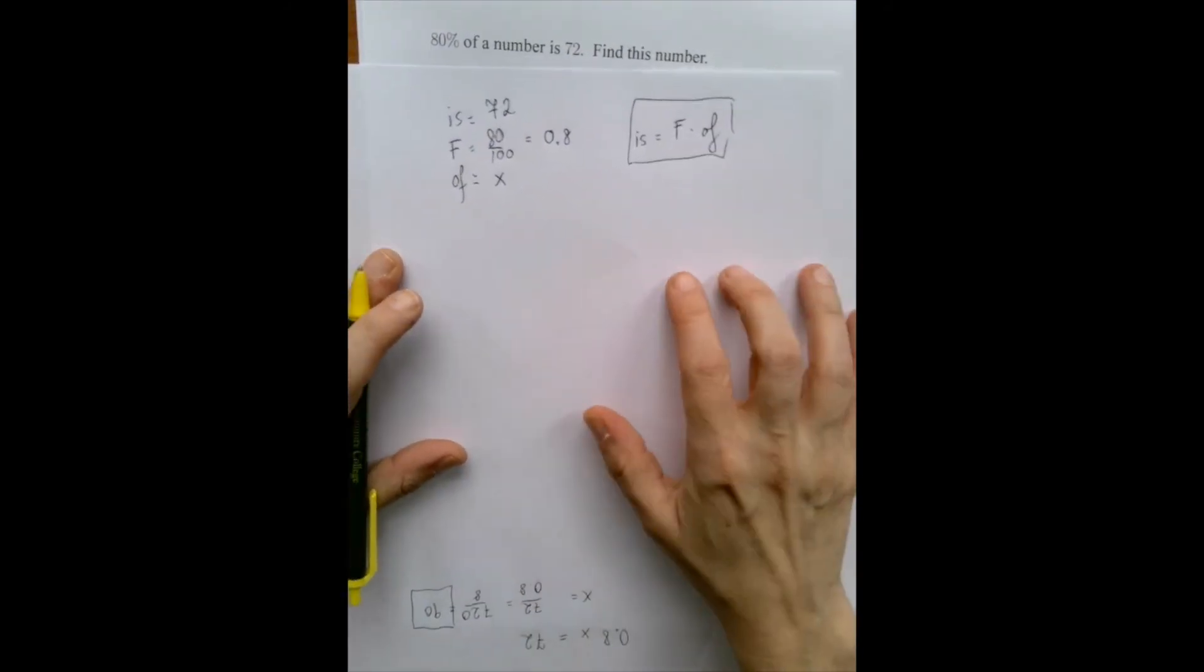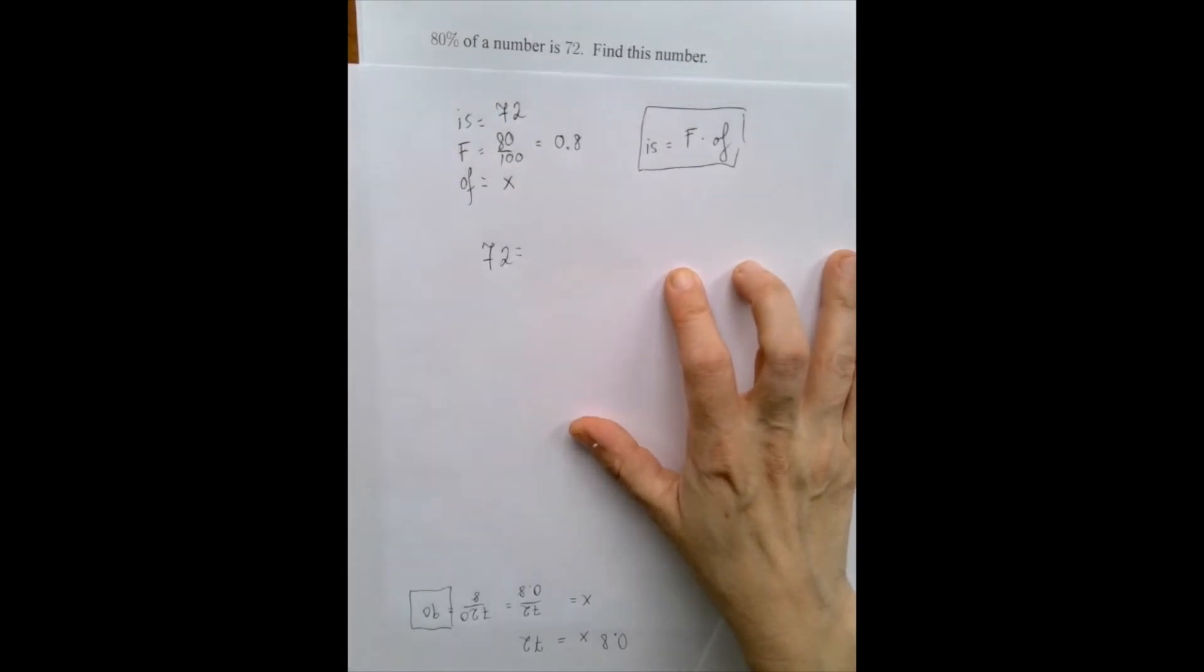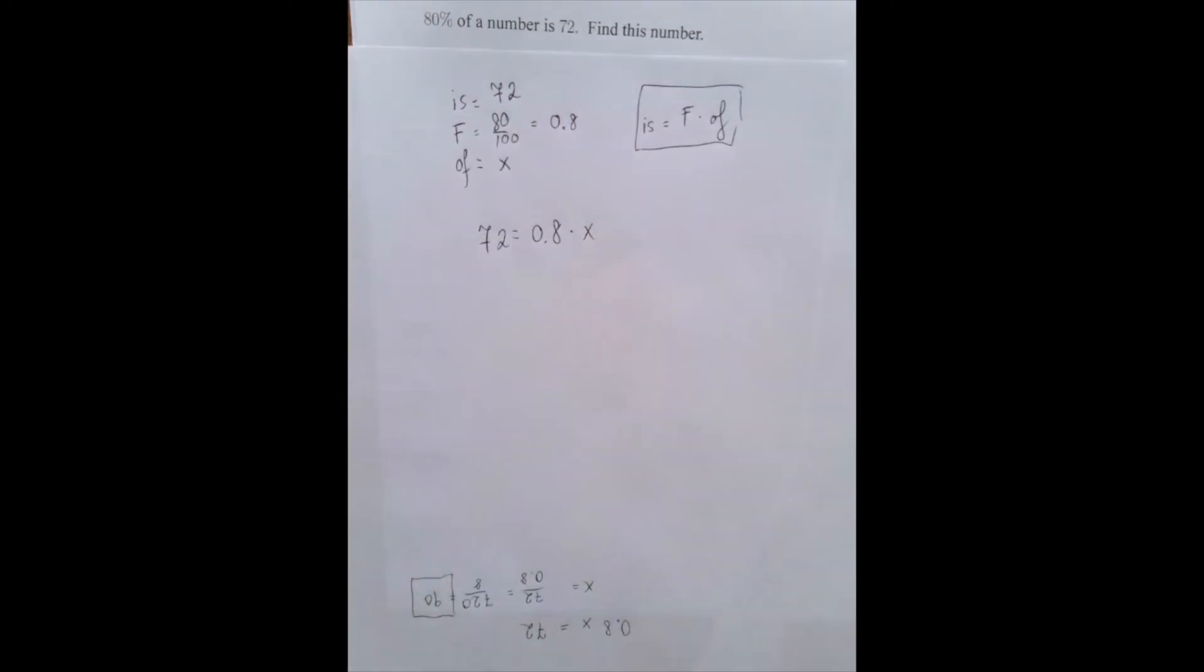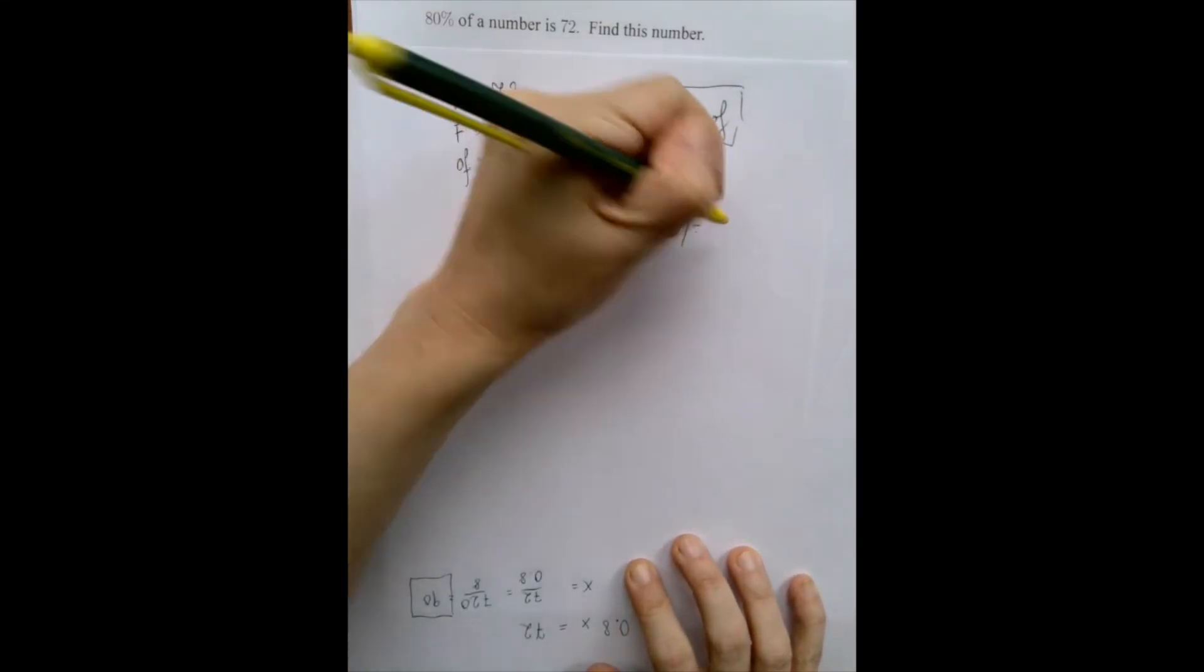So is is 72 equals 0.8 times x. And so now we have a cute, small, short little one-step equation, which we will solve for x. We're going to divide by whatever is multiplying x. So we're going to divide both sides by 0.8.